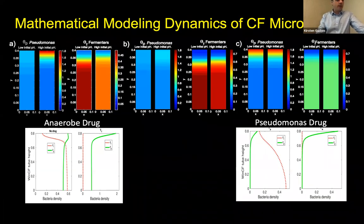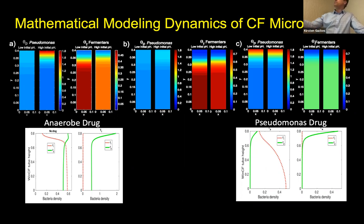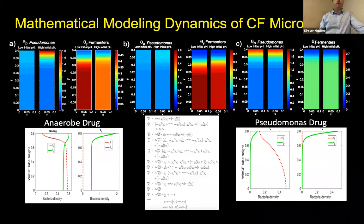We think we're getting to understand the system enough to bring in mathematical modeling. A couple of modelers from the Biofilm Institute at Montana State University approached me at a think tank conference in Cambridge, England. They were interested in getting away from single-microbe models. We break the system down into Pseudomonas and fermenters and use experimental data to set up Win-CF tubes and mathematically model this. We've done this with pH and are able to reproduce the results of our experiments. We're also using antibiotics in the models - a drug that kills anaerobes versus a drug that targets Pseudomonas - and the oxygen stratification very much affects the outcome of antibiotic therapy.